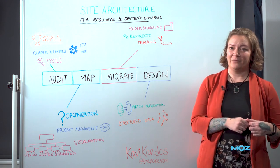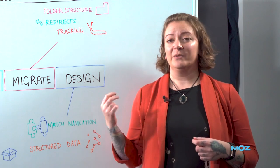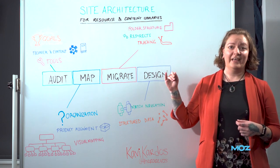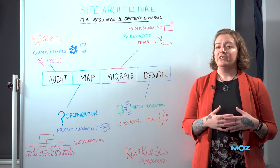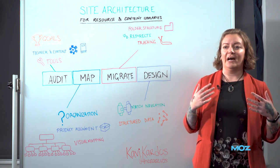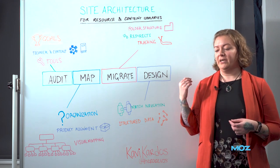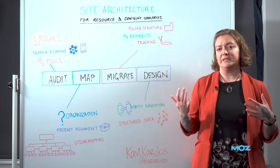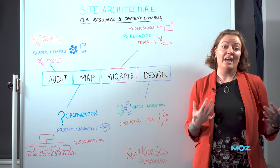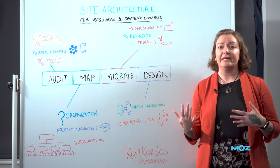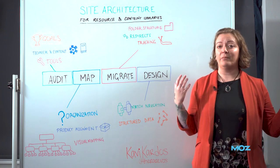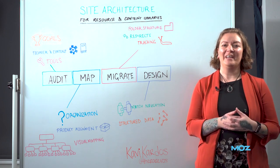Let's get started with auditing, our first step. When auditing a resource or content library, you're doing this on two fronts: the technical front and the content quality front. Your goals include user experience first and foremost — you might have unintuitive navigation, not many filtration options, menus that aren't intuitive, or it's hard for users to find topics or filter by content types like videos, infographics, or downloadable templates. You might also find orphaned content — really high quality content that's impossible to find because it's not linked to from anywhere else on the site.